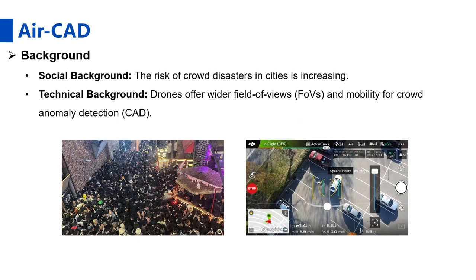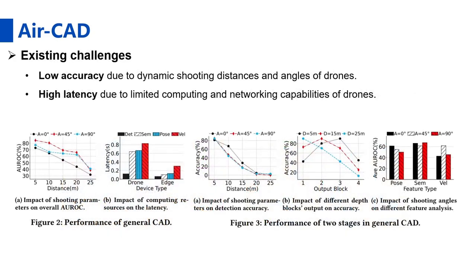As urban populations continue to grow, the risk of crowd disasters in cities, like stampedes, is increasing. Recently, drones connected via the web are increasingly being used for crowd anomaly detection to prevent crowd disasters. However, existing solutions face many challenges, such as low accuracy and high latency, due to drones' dynamic shooting distance and angles, as well as their limited computing and networking capabilities.